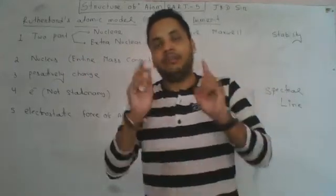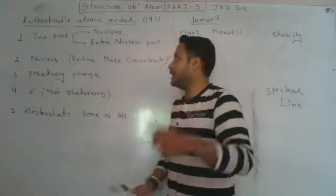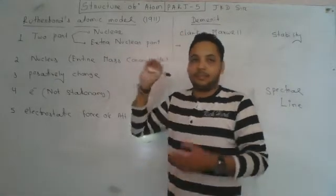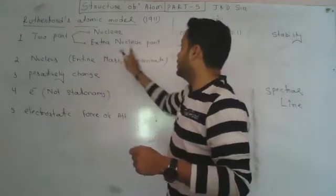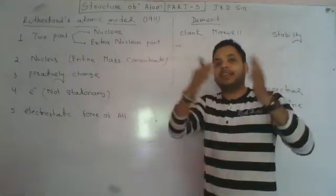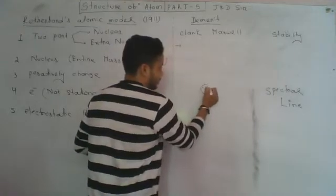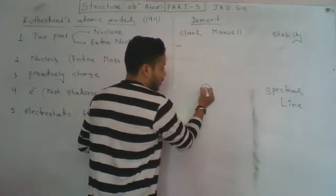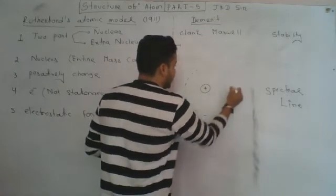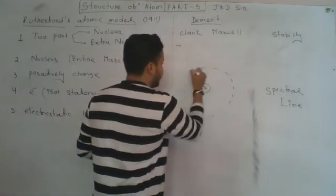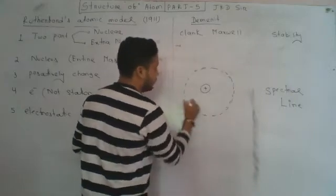The atom can be classified into two parts: one is the nuclear part, the central part, and the other is the extra-nuclear part. This region surrounding the nucleus is called the extra-nuclear part.